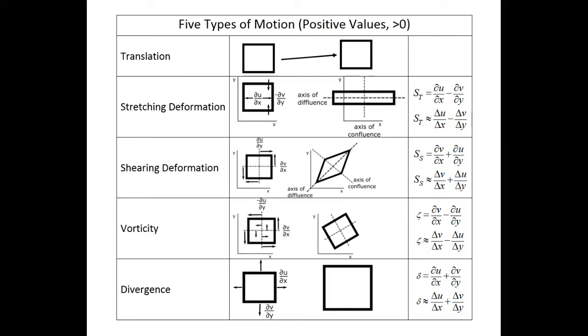Note that if we know the wind velocity vectors in an Eulerian grid, then we can calculate these five wind types for an air flow by determining the changes in the velocities as functions of x and y.